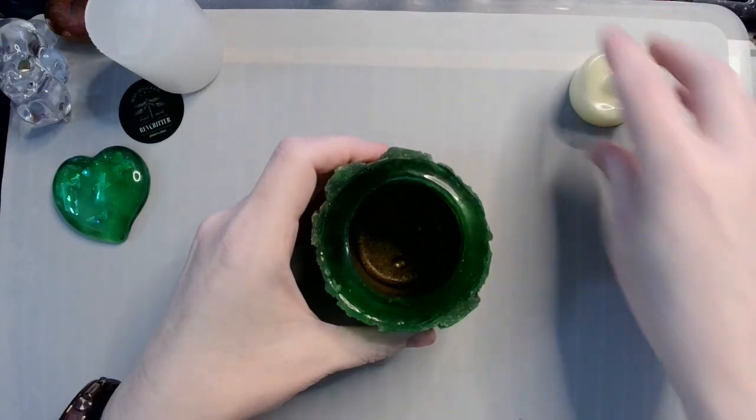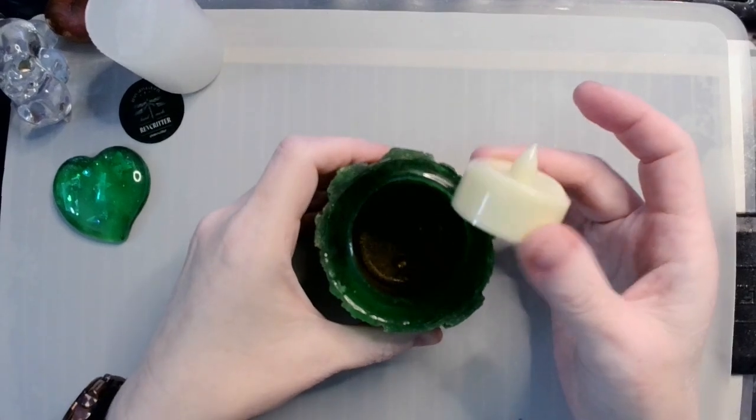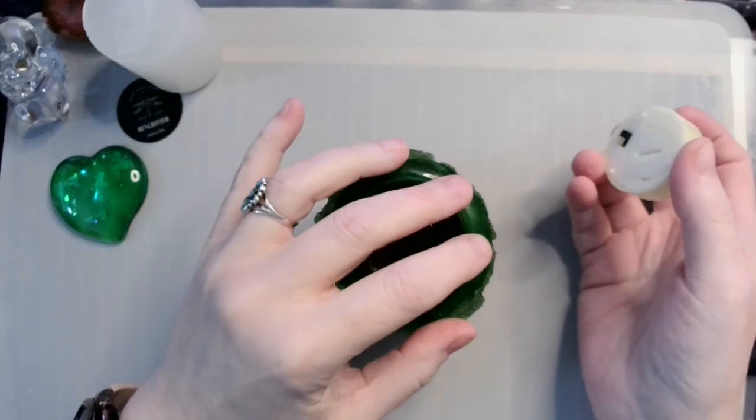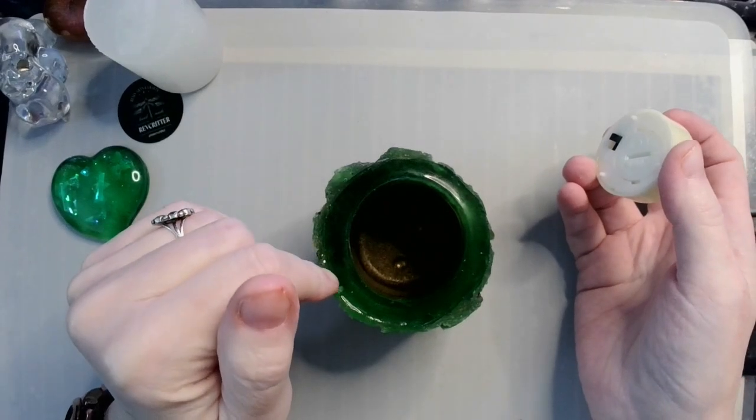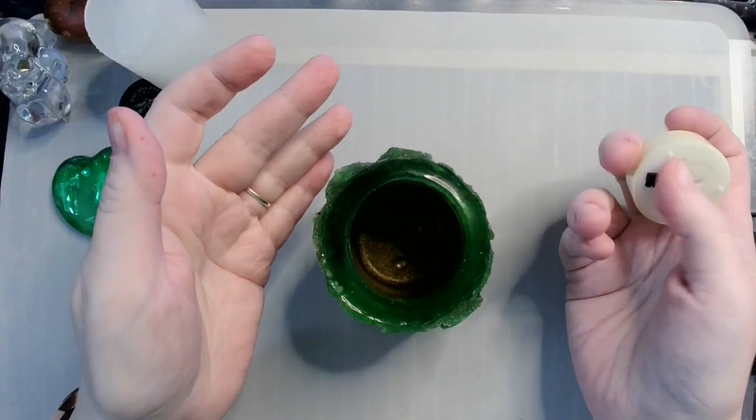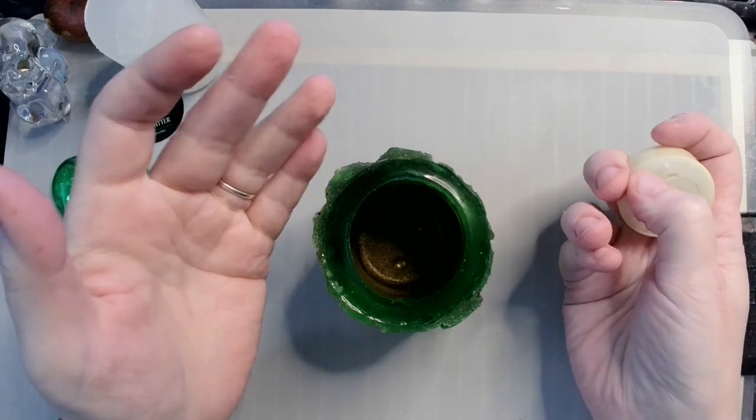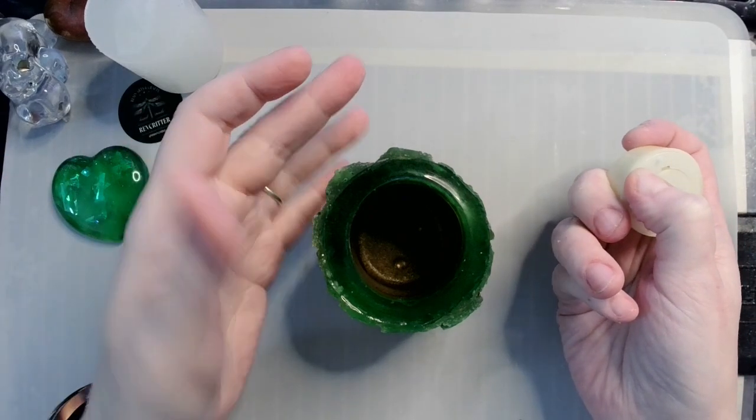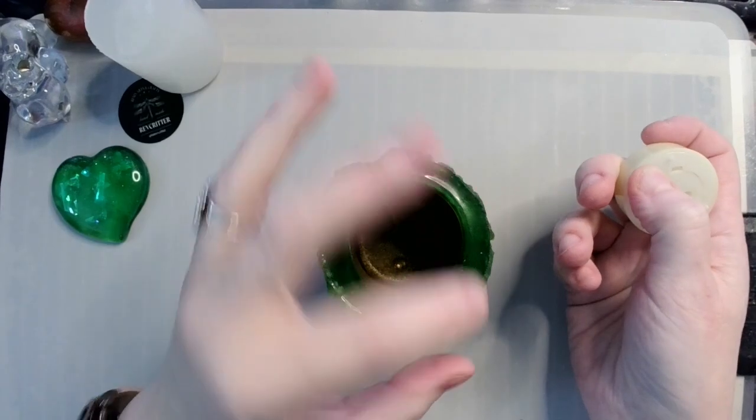All right, so now, of course, tea light. This is resin. If you make something like this out of resin, like a tea light holder or candle holder, please do not use an actual real wax candle. Not smart.